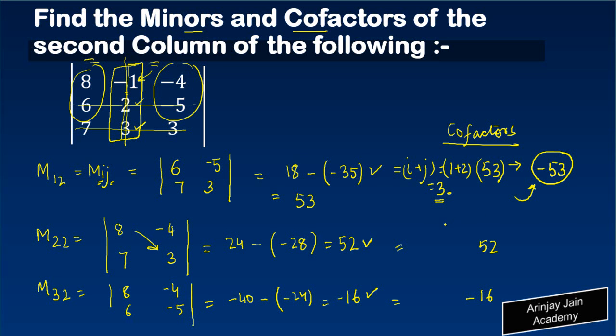In this case, the row is second, the column is second. 2 plus 2 is 4, which is even, and therefore we will add a plus value over here.